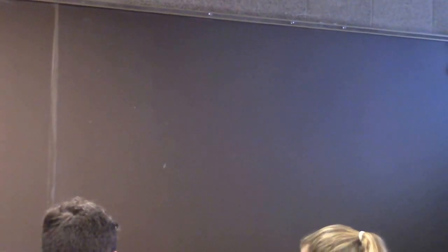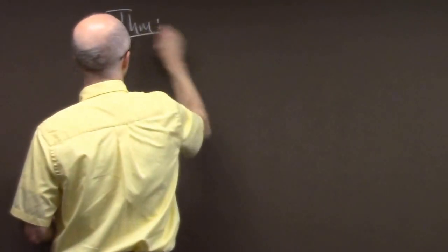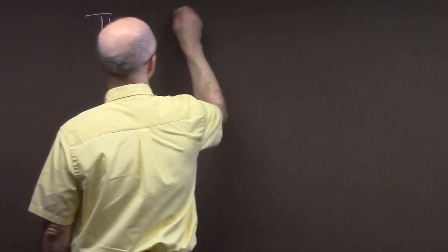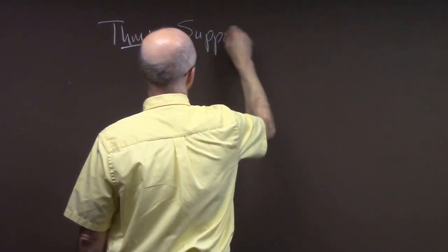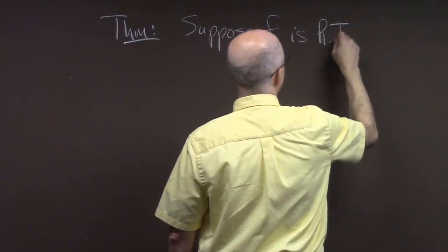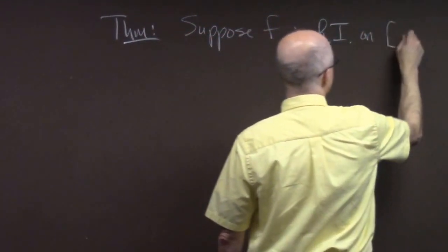If you've got your book, you can look at — it's referring to theorem 5.14 to prove that. So theorem 5.14 is on page 177. We did talk about this last time. Suppose you've got a Riemann integrable function on an interval — suppose F is Riemann integrable on the closed interval from A to B.